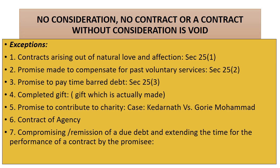Exception number one: contract arising out of natural love and affection. There is natural love and affection between family members — husband and wife, grandfather and grandson or granddaughter, grandmother and grandson or granddaughter, etc. In case any agreement is made between these family members where no consideration moves from one of the parties, it is still treated as valid. For example, out of natural love and affection, a husband wanted to share a certain part of his property with his wife. This is a valid contract, provided it is in writing and registered.